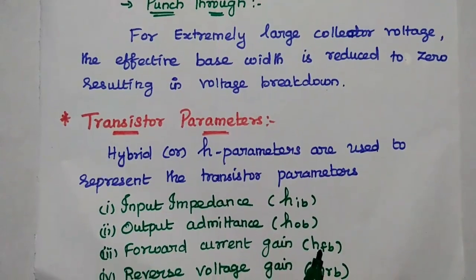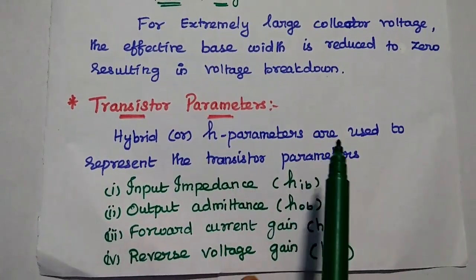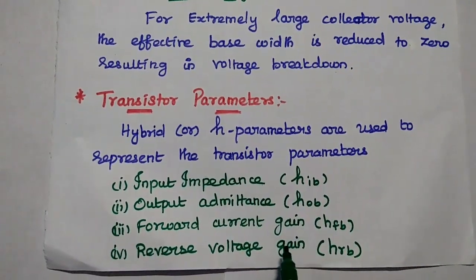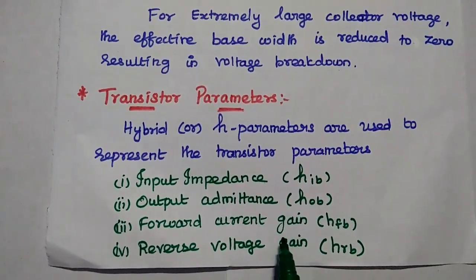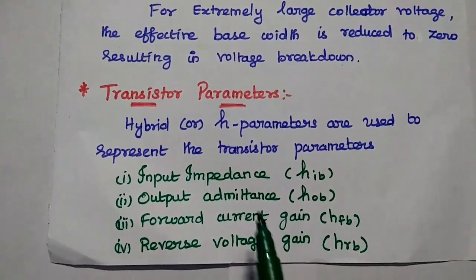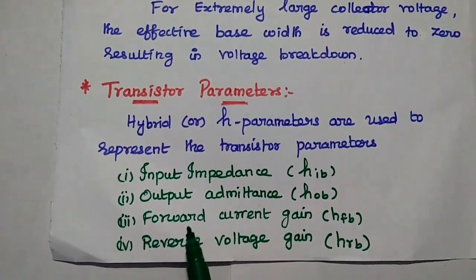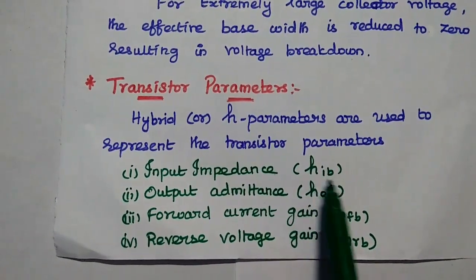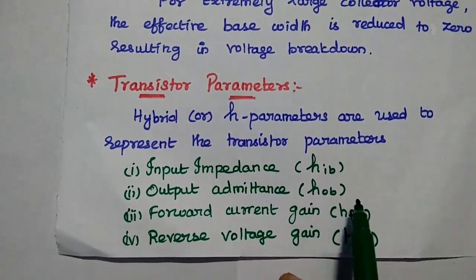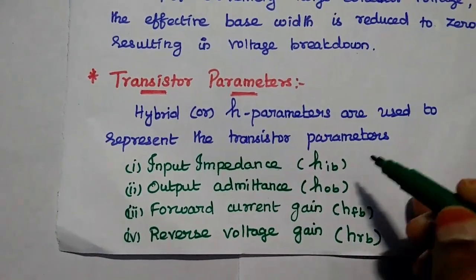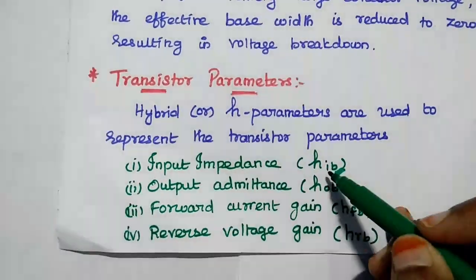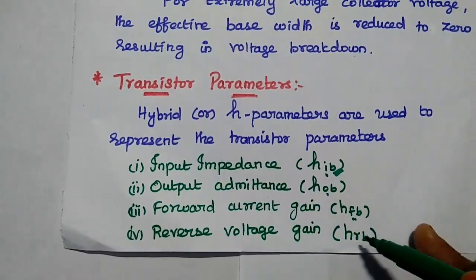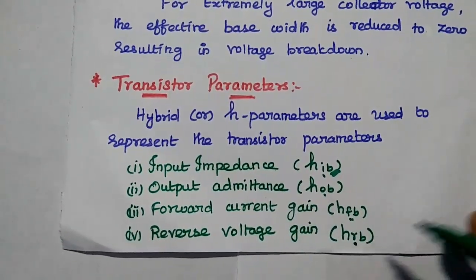Next are transistor parameters. We use hybrid or H-parameters to represent the transistor parameters. There are four important parameters for CB configuration: input impedance, output admittance, forward current gain, and reverse voltage gain. These are represented as HIB, HOB, HFB, and HRB respectively. Here B represents common base configuration, I represents input impedance, O represents output admittance, F represents forward current gain, and R represents reverse voltage gain.